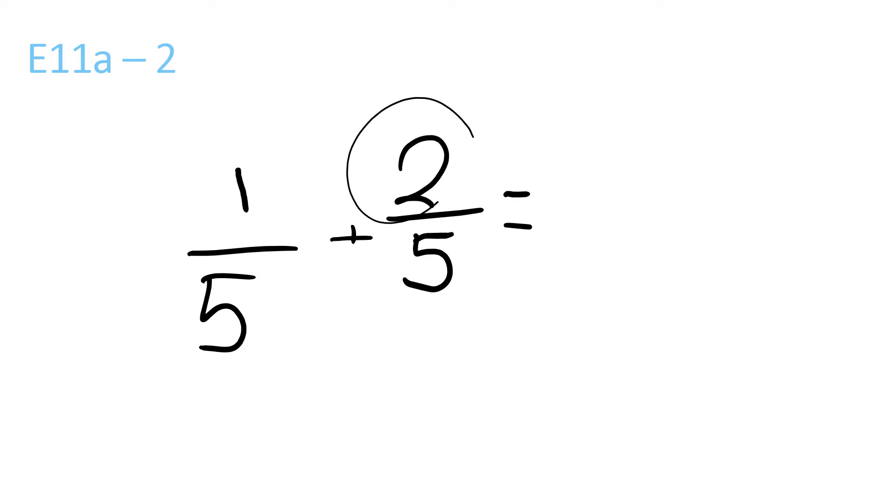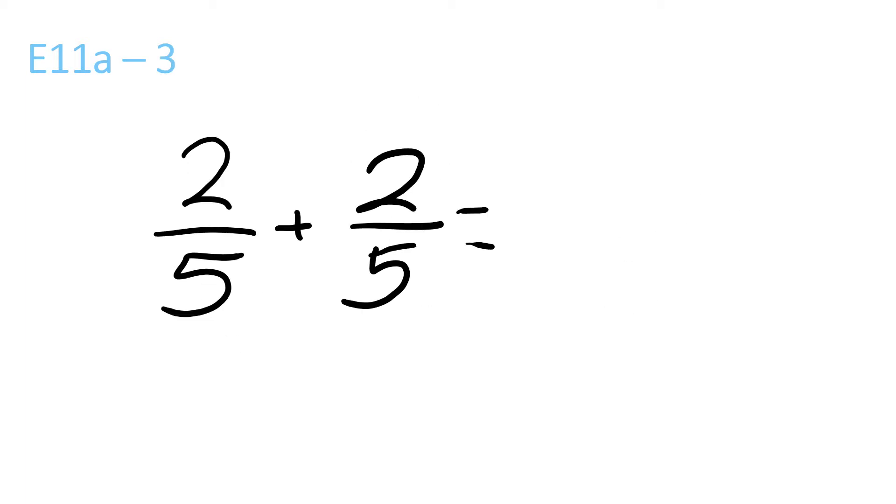This one is 1 plus 2, 3 over 5. In this one, you've got to do these two, so that will be 2 plus 2 is 4 over 5, because 5 is at the bottom.